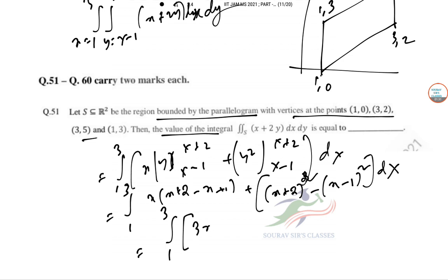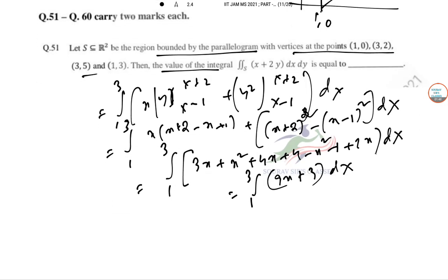This is 3x + x² + 4x + 4 minus x² + 1 plus 2x dx. So integral from 1 to 3 of (9x + 3) dx. Okay, so [9x²/2 + 3x] evaluated from 1 to 3.